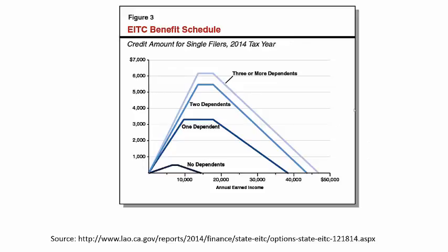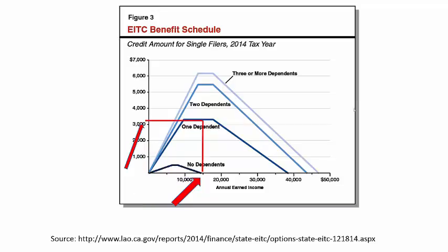This chart shows the basic structure of how an EITC amount is calculated. Schedules vary by whether taxes are filed individually or jointly with a spouse; this example is for single filers. Focusing on the line for filers with a single dependent or single qualifying child, the amount of the EITC increases with earnings until earnings reach approximately $10,000 per year. For an individual earning $5,000 per year, for example, the EITC amount would be roughly $1,800. For those earning between $10,000 and $18,000 per year, the EITC amount would be just over $3,000.